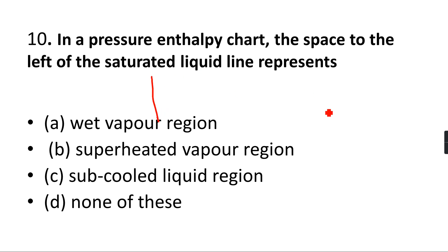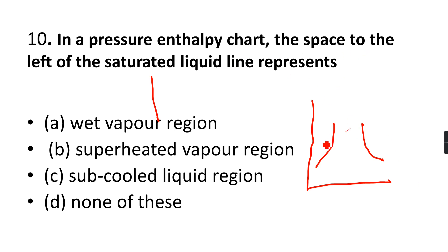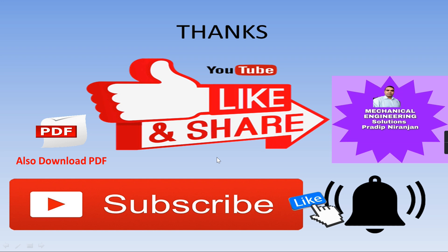In the pressure-enthalpy chart, the saturated liquid line divides the chart. To the left of the saturated liquid line is the sub-cooled region. Option number C — sub-cooled region on the left — is the right answer. If you have any questions about any exam, feel free to reach out for help.